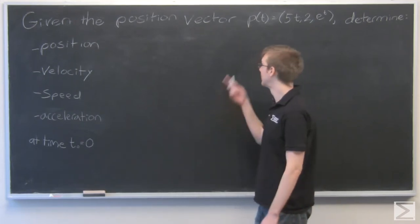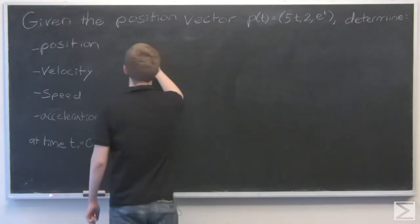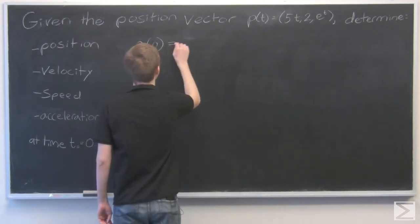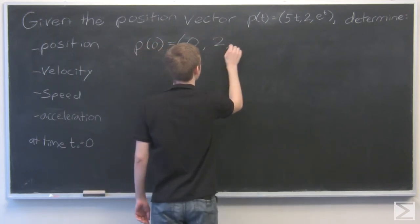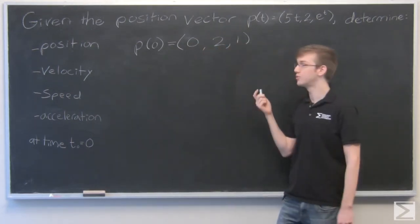So the first one is pretty easy. This is the position vector, so all we have to do is plug in 0. So we get the result 0, 2, 1.